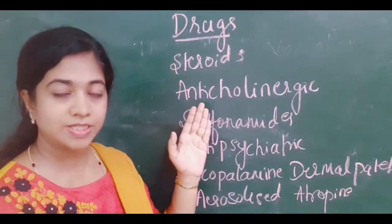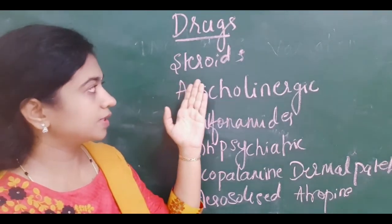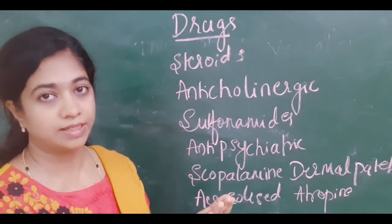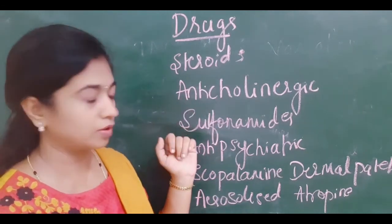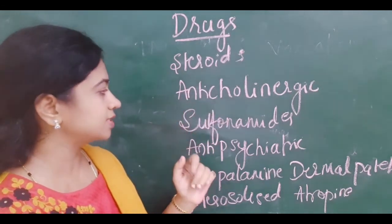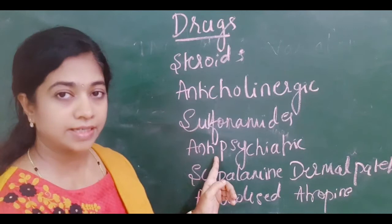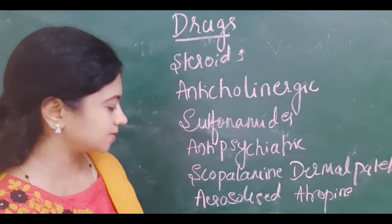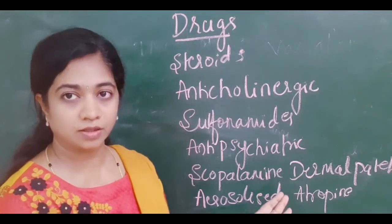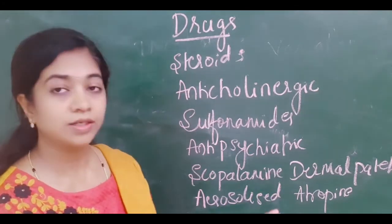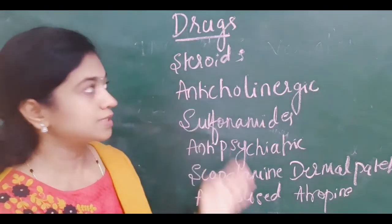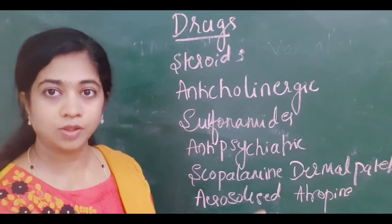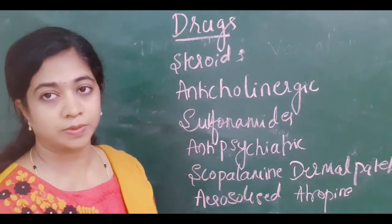Certain drugs can increase intraocular pressure: steroids used as topical eye drops or as ointment for skin conditions can also raise IOP. Anticholinergic drugs, sulphonamide drugs, anti-psychiatric drugs, scopolamine dermal patches used for skin conditions, and aerosolized atropine used for COPD patients — all these can raise the intraocular pressure. If possible, avoid these drugs and shift to alternatives so that intraocular pressure is controlled.